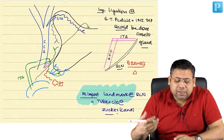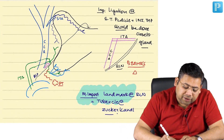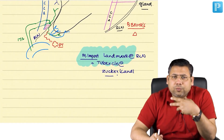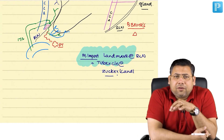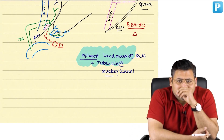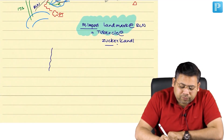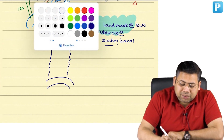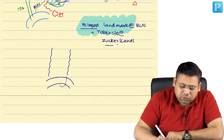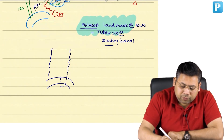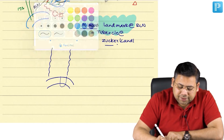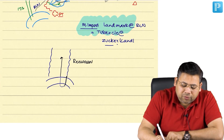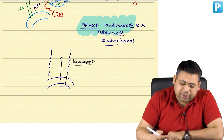Now, having initiated the talk on recurrent laryngeal nerve, let us discuss this concept. There are two nerves — superior vagal branch and inferior vagal branch. The superior vagal branch gives the external and internal laryngeal nerve; the inferior vagal branch should go to the larynx. But when it is going down, these branches take a U-turn around the arch of aorta and ascend up in the neck. This is the reason why they are known as recurrent — they go down and retrace their path upwards.